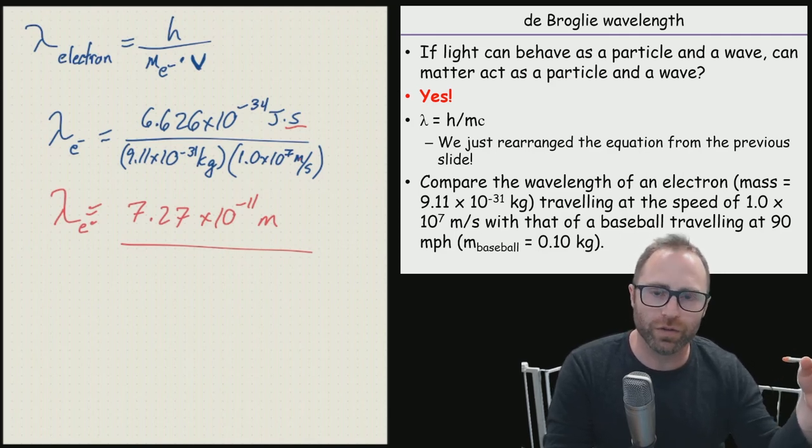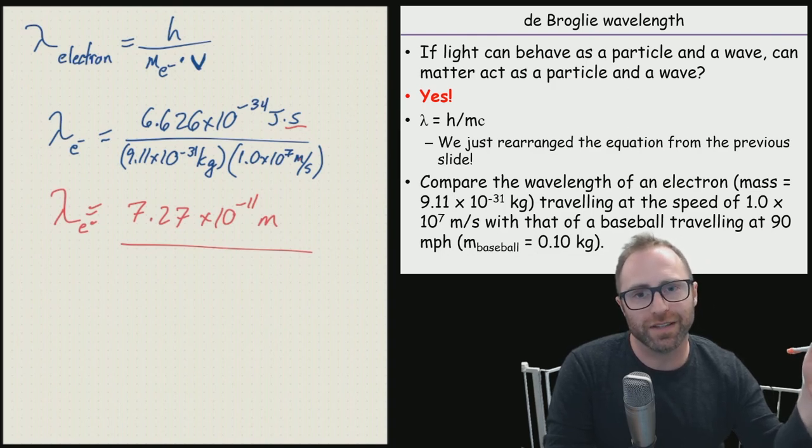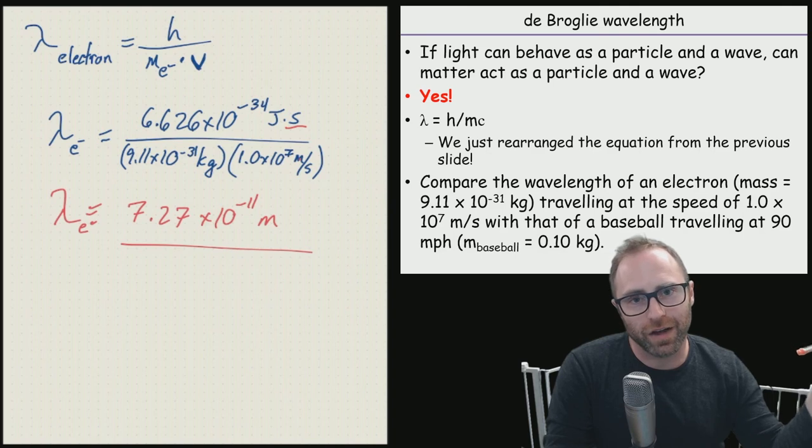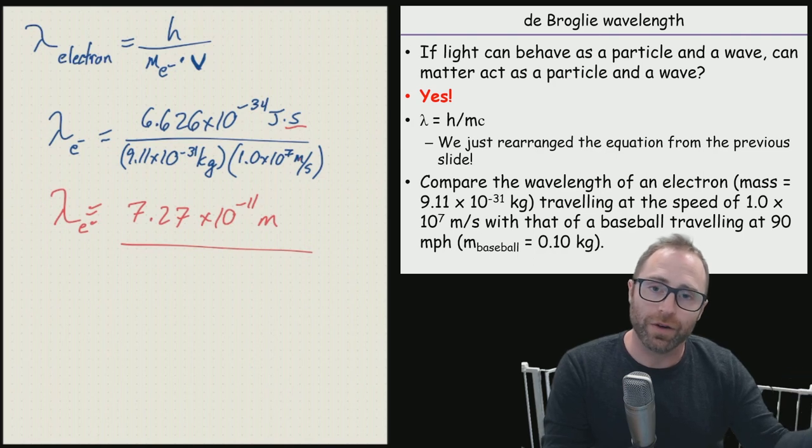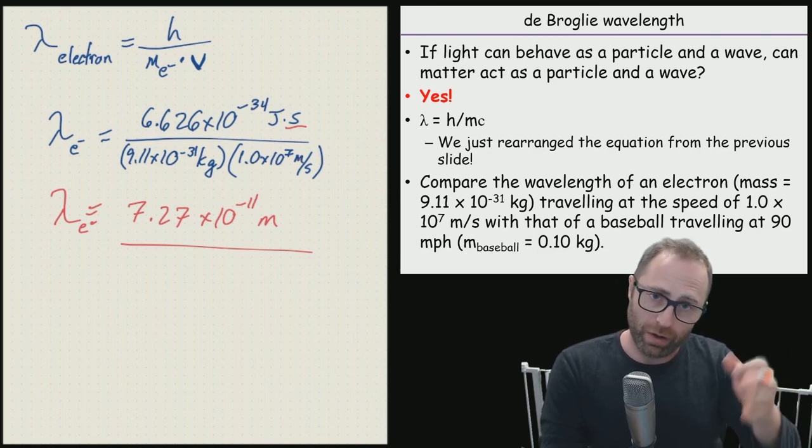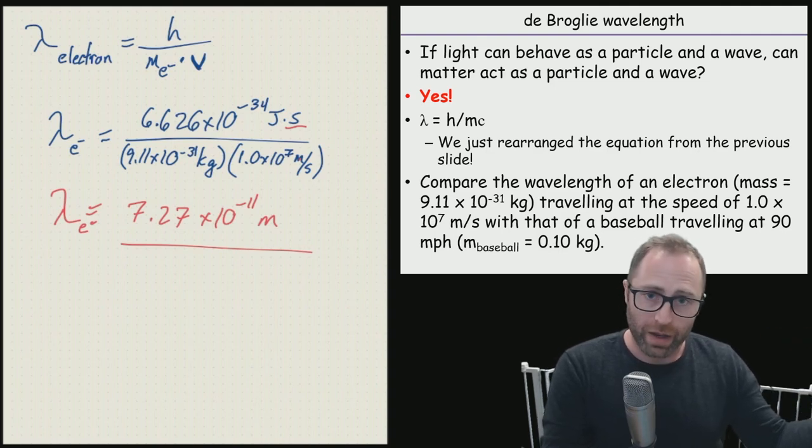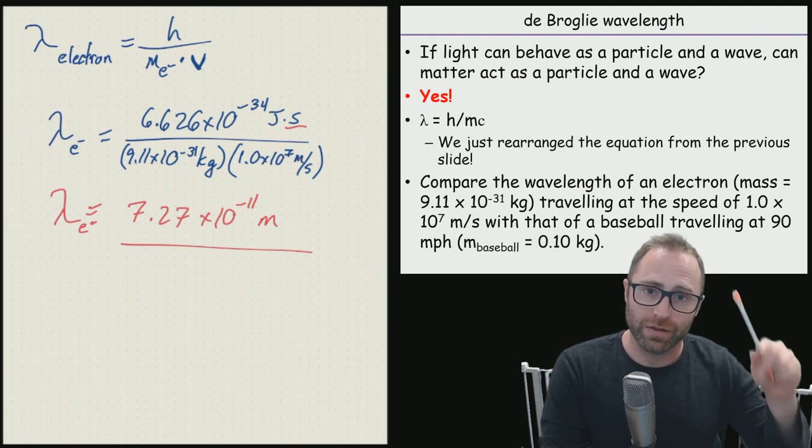And what you should find is a number that's around the 7.27 times 10 to the negative 11th meters. If you kick that over to nanometers or something like angstroms, you're going to see that, yeah, it's still a pretty small number, but now the wavelength of an electron, especially an electron moving around at the speed that we have listed, is going to be significant. This wavelength does now indicate that the wave-like properties for an electron are going to be significant. And we're going to see that pop up when we start talking about quantum mechanical models past the Bohr model.